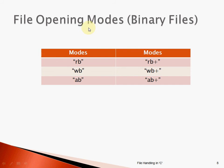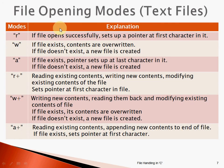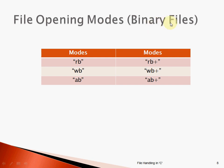Now let's see the modes for binary files. All six modes apply as before, with the addition of the letter B to specify binary file operations: RB (read binary), WB (write binary), AB (append binary), RB plus (read binary plus write), WB plus (write binary plus read), and AB plus. The explanations are the same as for text files — the only difference is that we use binary files instead of text files.